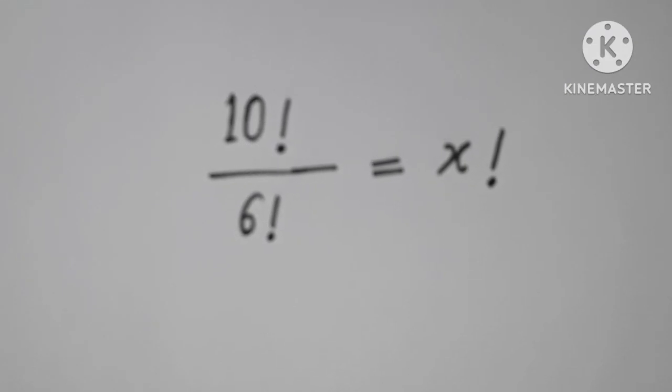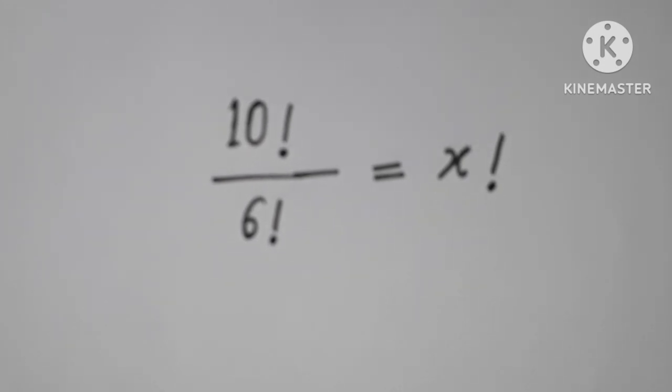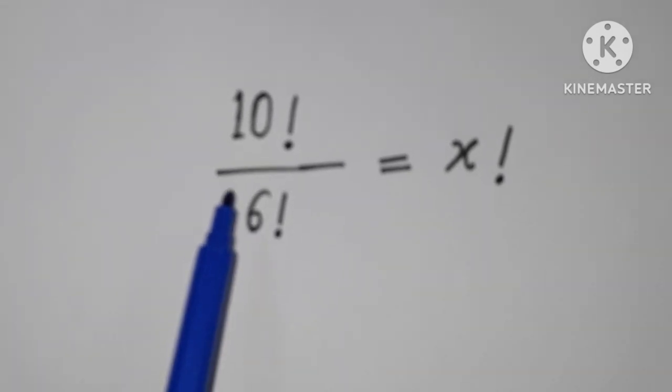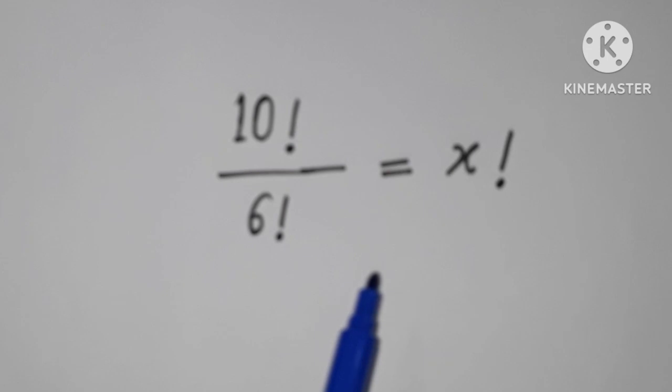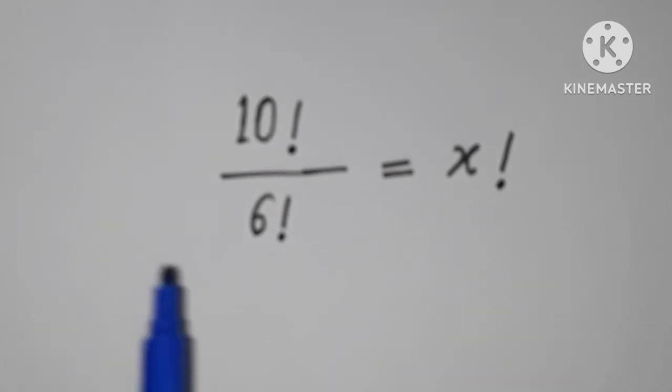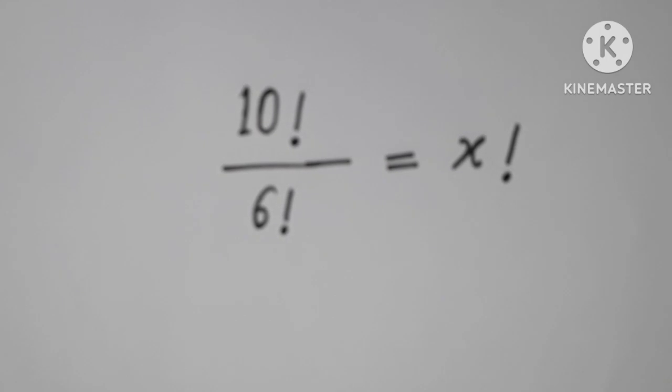Welcome back to Triple X Learning. Today we have this question based on factorial. Here we have to get the value for x so that we can satisfy this equation: 10 factorial divided by 6 factorial equals x factorial. So what will be the answer? Let's solve it.